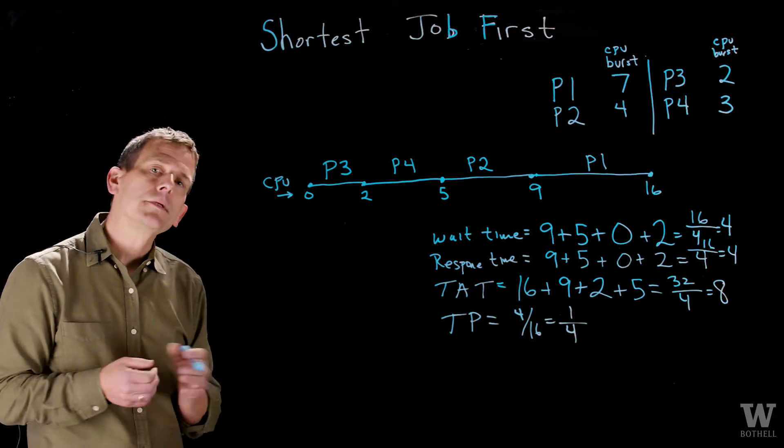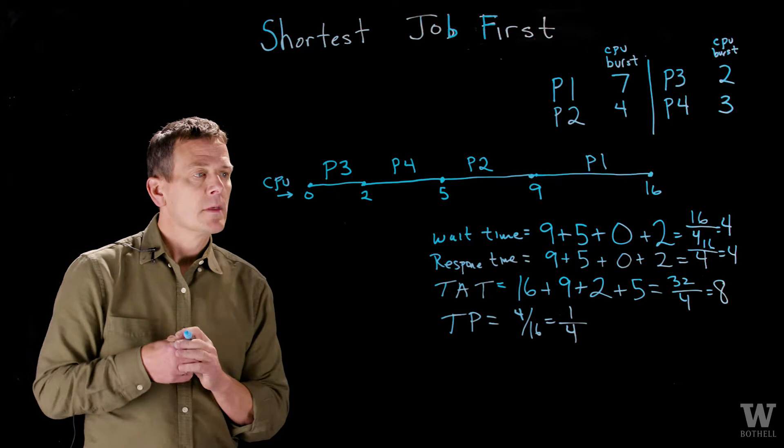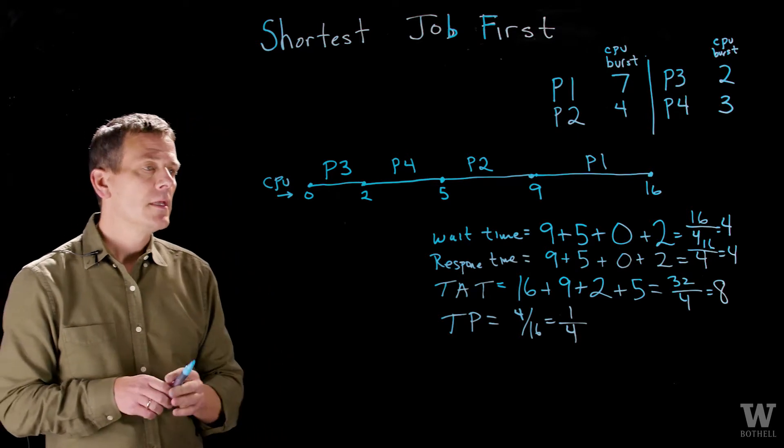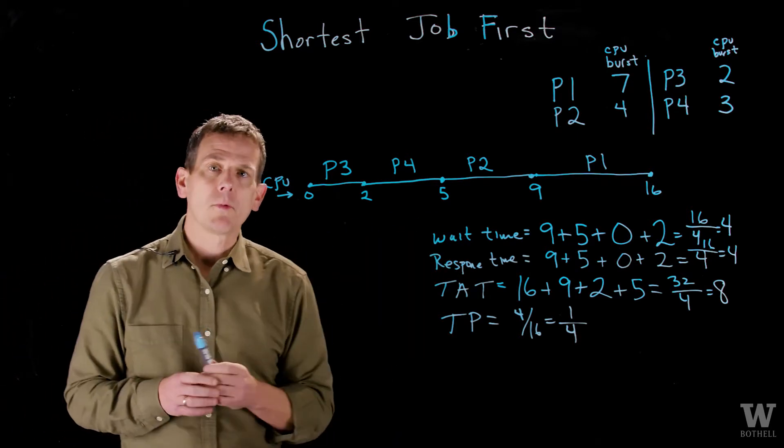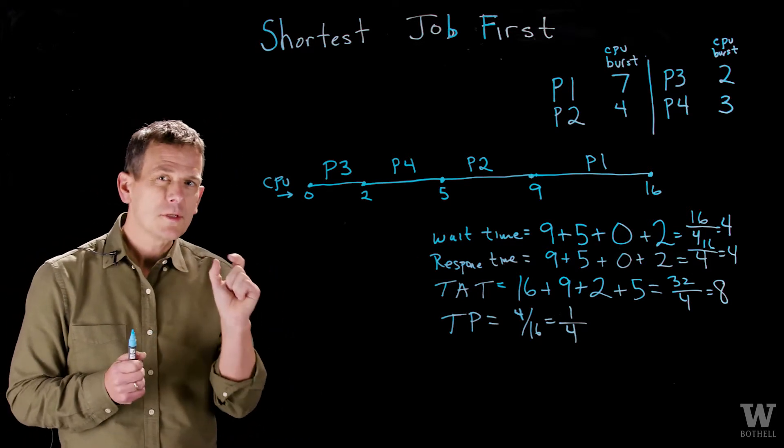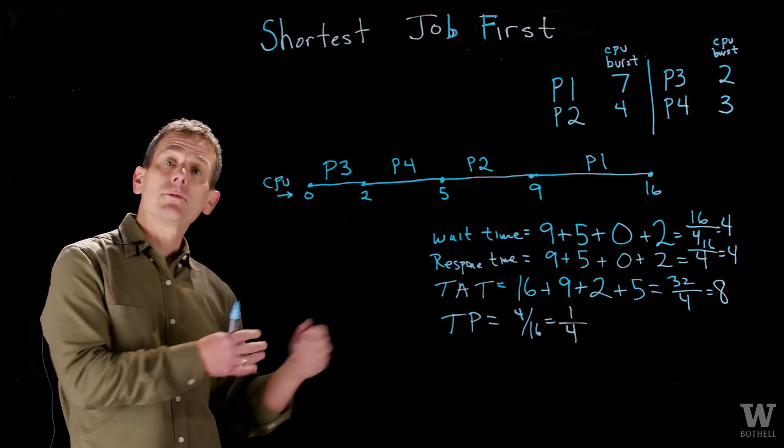Now, why would we implement the shortest job first? It turns out that the shortest job first is an optimal way to reduce wait time. If we can get those really short jobs done, the other jobs don't have to wait as long.